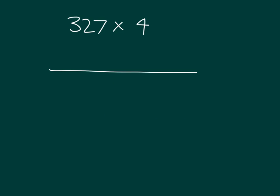Here we have three hundred twenty-seven times four. Let's do the same type of thing, where we will model it within the place value chart and also write the partial products.